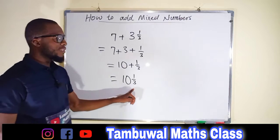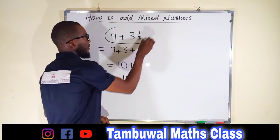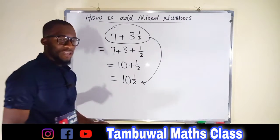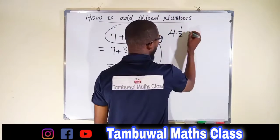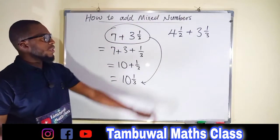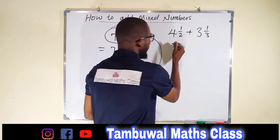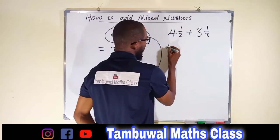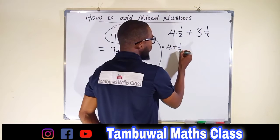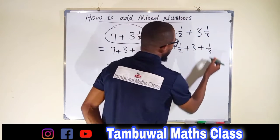So 10 plus 1 over 3 is the same thing as the mixed number 10 and 1 over 3 — a whole number and a fraction added together. Each of these mixed numbers can be expressed as a sum of a whole number and a fraction, so for our next example: 4 plus 1 over 2, plus 3 plus 1 over 3.